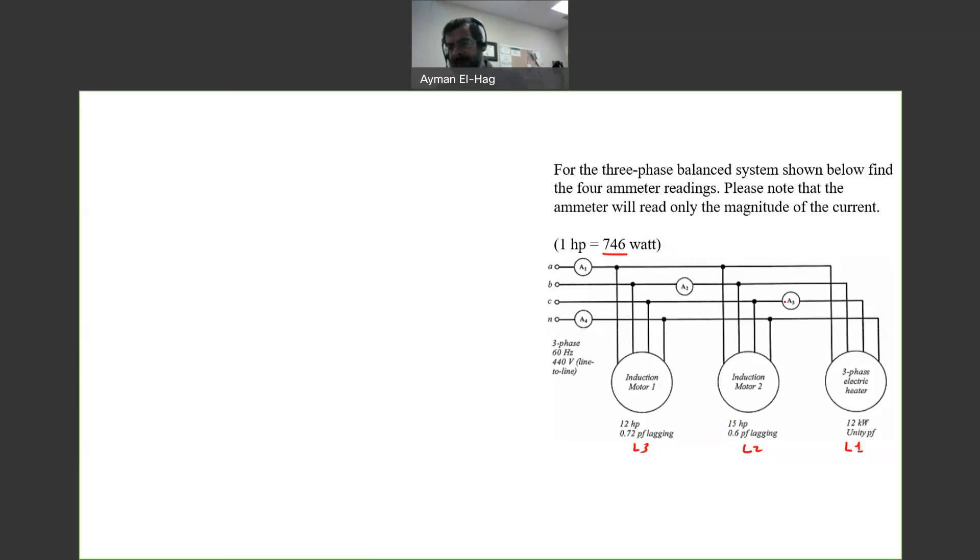How to approach this problem? When you look at the ammeter, let's start from a3. A3 measures the current that goes into the first load, load one. A2 is the ammeter that measures the current that goes for load two and load one. Finally, a1 measures load three, load two, and load one.